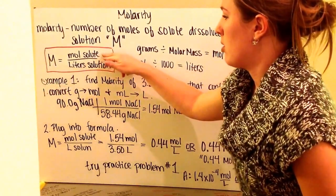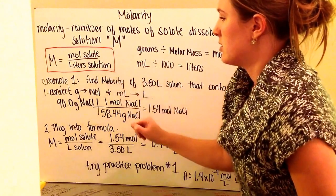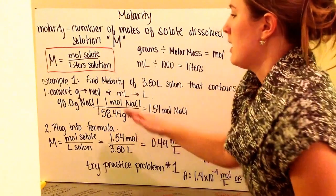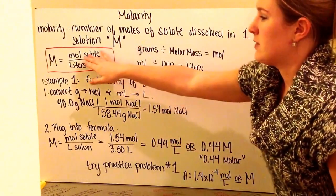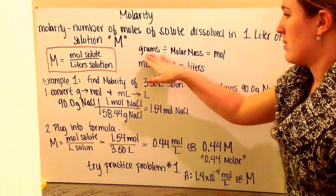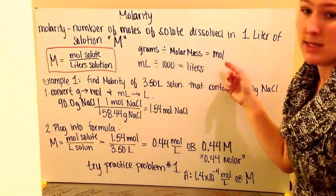Molarity is equal to the moles of solute divided by liters of solution. An important note is that we have to use moles and liters. Therefore, if we're given grams, we need to divide by the molar mass to get moles.